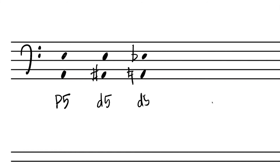There are two ways to make the diminished fifth: you can raise the lower note to make the interval a half step smaller, or you can lower the top note. A to E is the perfect fifth. With A-sharp as the lower note, that gives us a diminished fifth. With E-flat as the top note, that also gives us a diminished fifth. Either way renders a diminished fifth.